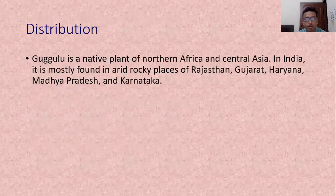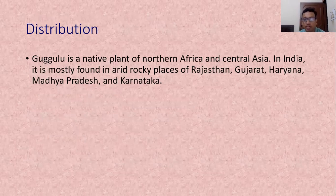Regarding distribution, the plant Gugul is a native plant of Northern Africa and Central Asia. In India it is mostly found in the arid rocky places of Rajasthan, Gujarat, Haryana, Madhya Pradesh and Karnataka.